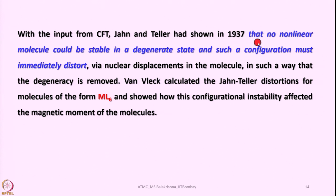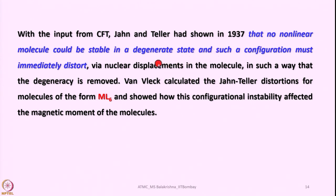No non-linear molecule could be stable in a degenerate state — such a configuration must immediately distort via nuclear displacements in the molecule in such a way that the degeneracy is removed. Such molecules will try to remove the degeneracy and go to lower symmetry.